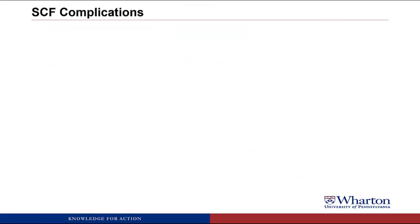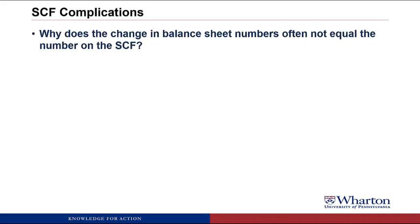Next, I want to talk about some of the complications you may run into when looking at a statement of cash flows. These are not things we're going to explicitly cover in the course, but I want you to be aware of them because you will run into them in practice. All these complications surround the question: why doesn't the change in the balance sheet numbers often equal the number on the statement of cash flows? In all the examples we've done so far, the change in balance sheet numbers for accounts receivable is the exact same number you see in the operating section — but in real financial statements, you often see that's not the case for one of these four reasons.